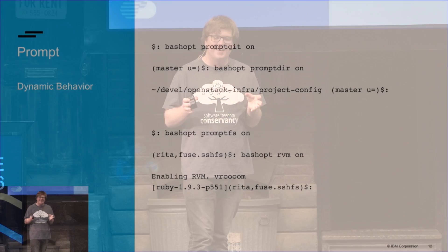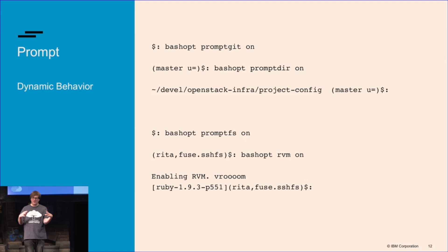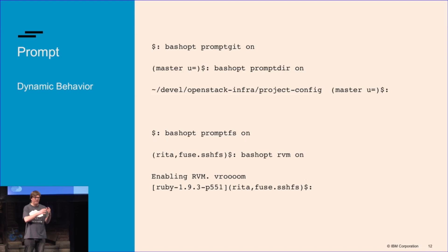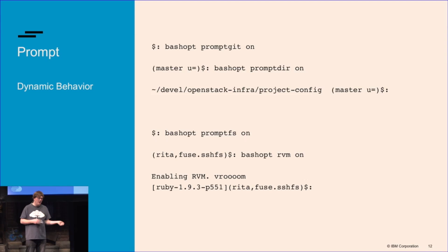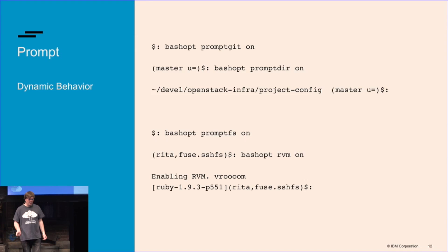I don't have any time to explain how this works, but what you should do is get to the point where you can dynamically control what your prompt does. So I can turn on Git tracking in my prompt, I can turn it off, I can turn on file tracking in my prompt, I can turn it off, I can turn on RVM, I can turn it off. It's really useful.